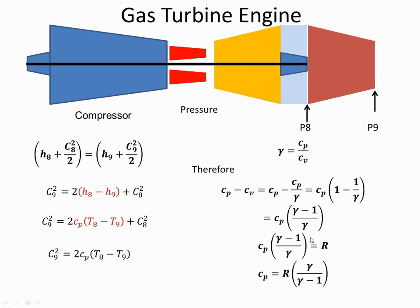So therefore, I can say Cp times gamma minus 1 over gamma is equal to R. And rearranging that, I have an expression for Cp, which I can stick into here. And that's what I'm left with.